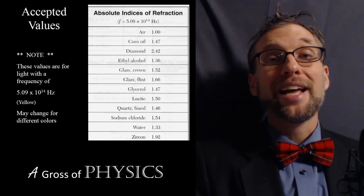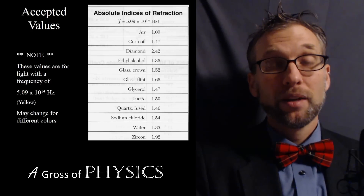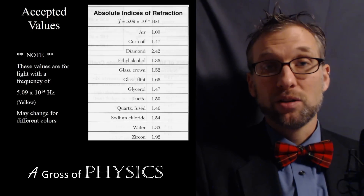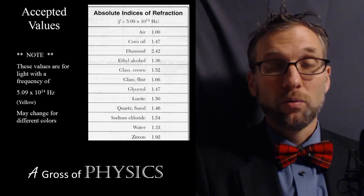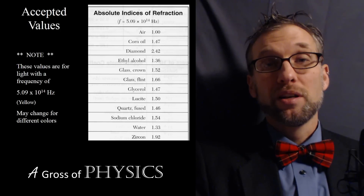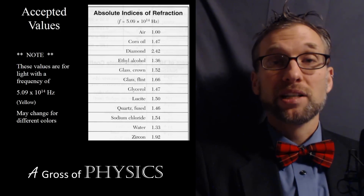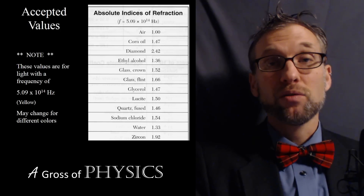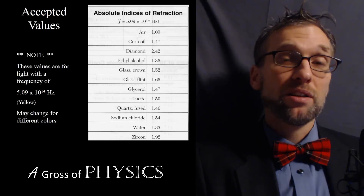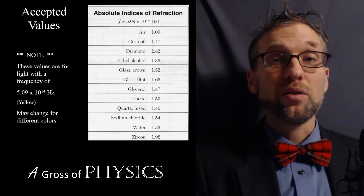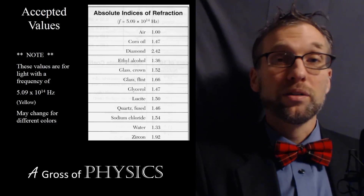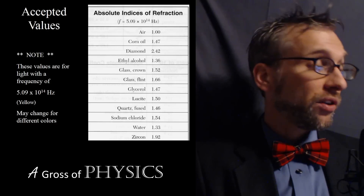We can't have a number less than 1, and theoretically we can have a value as big as we want. For our purposes, we can look for index of refraction values on the reference table, and that will give us a set of values for different materials.